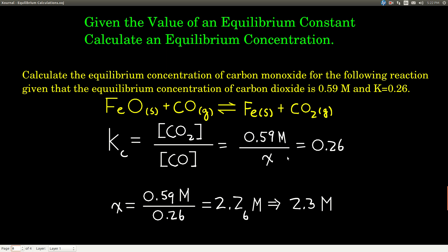Now we do a little bit of algebra: cross multiply, so the x comes to the top and the 0.26 comes to the bottom. We put this into our calculator and get the answer. For this reaction with this equilibrium constant, if the equilibrium concentration of carbon dioxide is 0.59 molar, then the equilibrium concentration of carbon monoxide will be 2.3 molar. And that's how you do it.